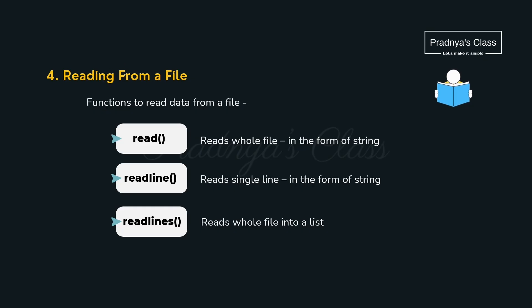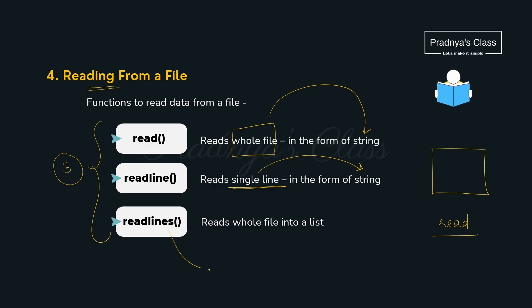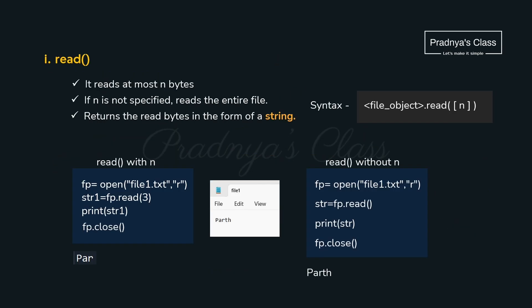Now we are moving to the important topic: how to read data from the file. Once we have written data, we write a program for reading instead of opening the file manually. For that we have three different options: the read() function, which reads the whole file as a string; the readline() function, which reads a single line as a string; and the readlines() function, which reads the whole file as a list of strings.